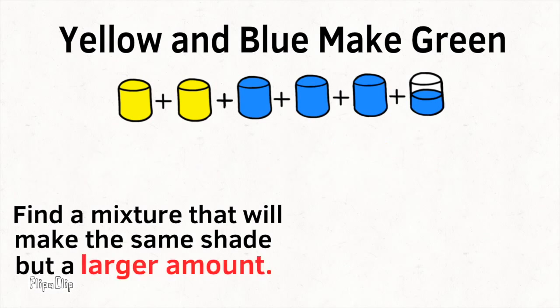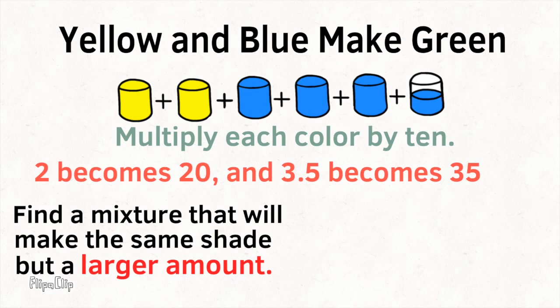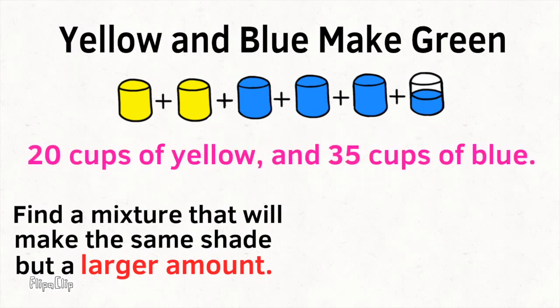Find a mixture that will make the same shade of green, but a larger amount. One easy way would be to multiply each color by 10. Two cups of yellow paint become 20 cups of yellow paint, and 3 and 5 tenths cups of blue paint becomes 35 cups of blue paint. So this larger mixture would be 20 cups of yellow paint and 35 cups of blue paint. To keep the same shade of green but have a larger amount, we kept the same ratio, we just added 10 times more of each color.